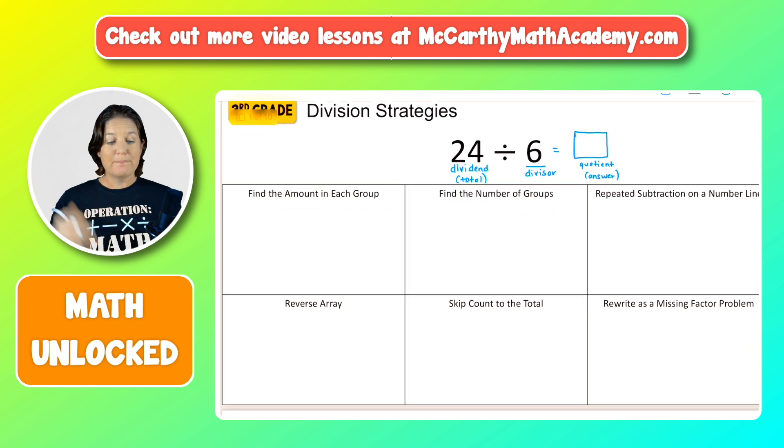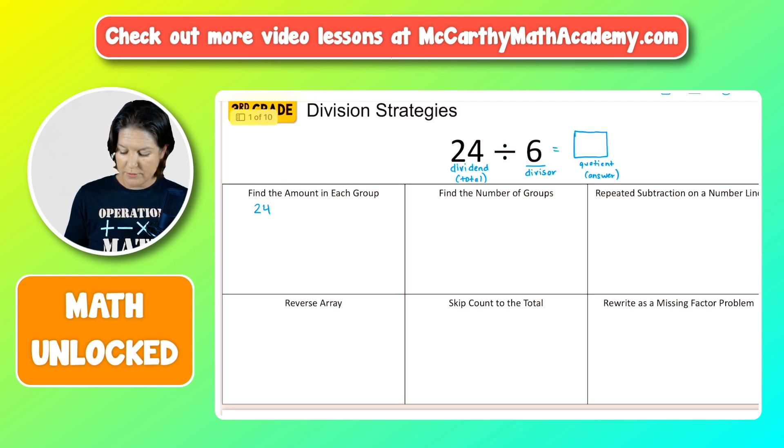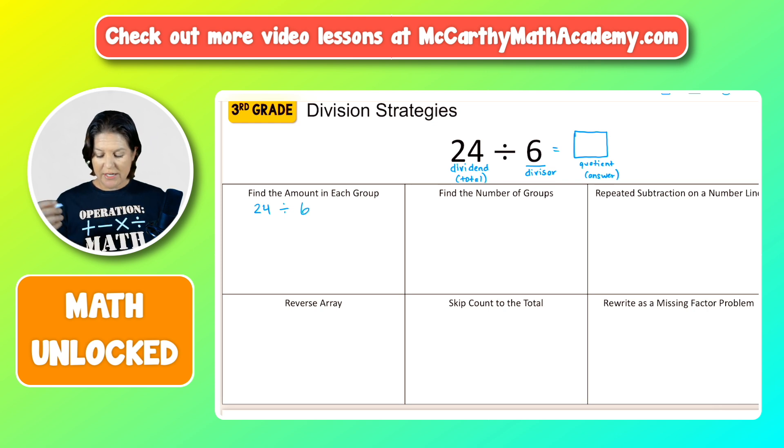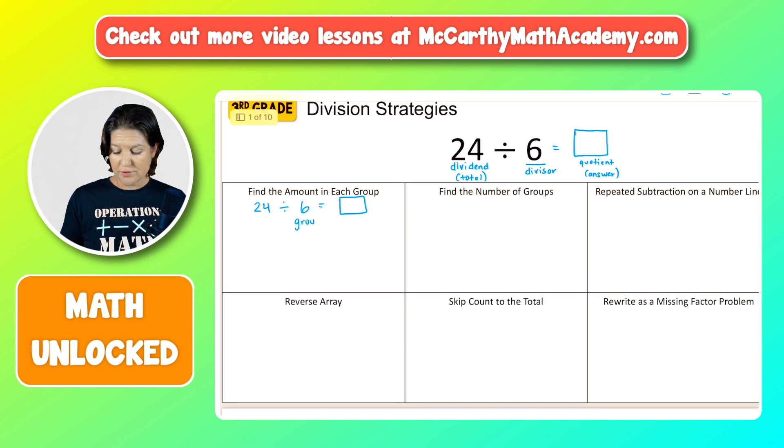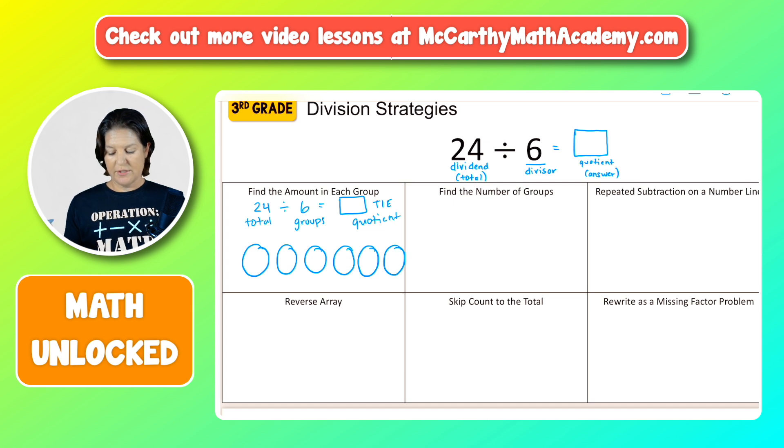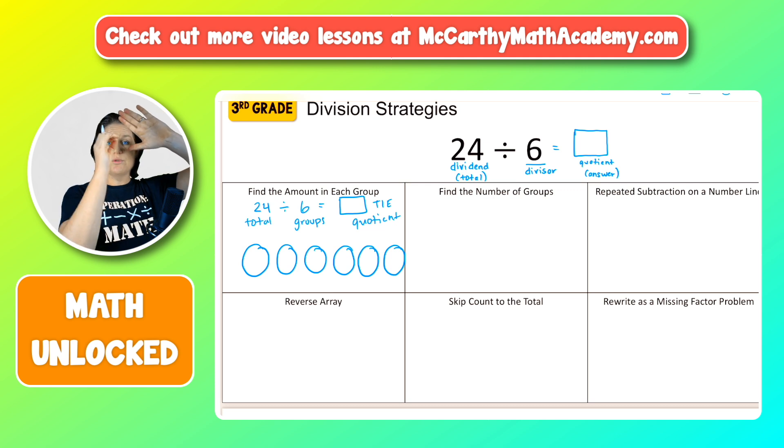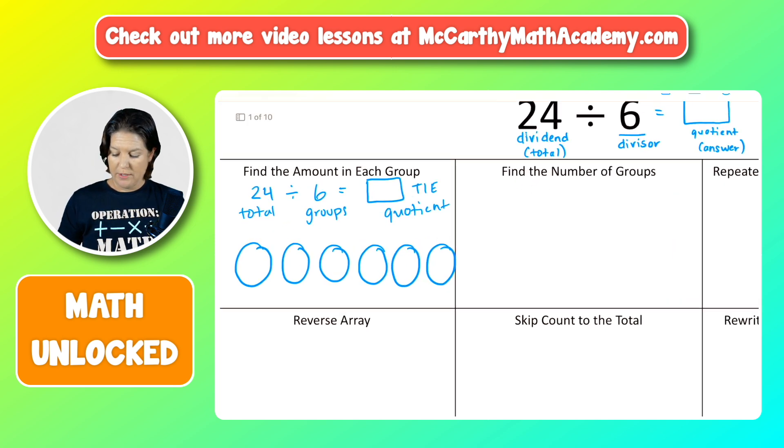Let's get into some strategies here. So first, let's figure out the amount in each group. So 24 total divided by six, and we're trying to find the amount in each group. So in this case, our six is going to be the number of groups. So we have our total of 24. That's our dividend divided by six. That will be our groups to figure out the quotient, which is the things in each group. So let's go ahead and draw six groups. One, two, three, four, five, six. There's six groups.